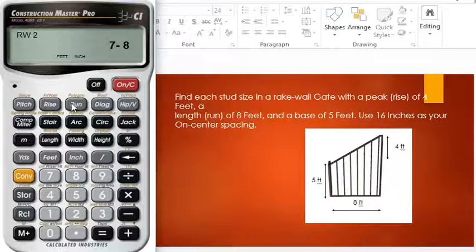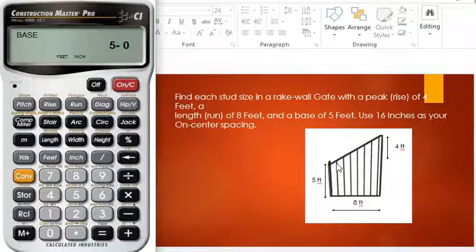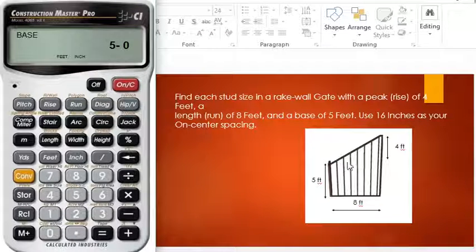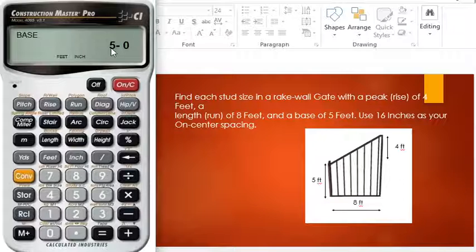Keep pressing RISE. You get 7 feet, then 6 feet 4 inches, then 5 feet 8 inches, then 5 feet, and subsequently all the values have been displayed.